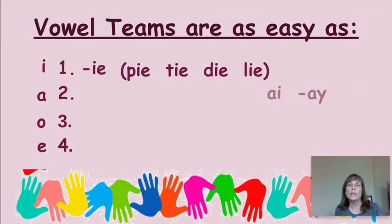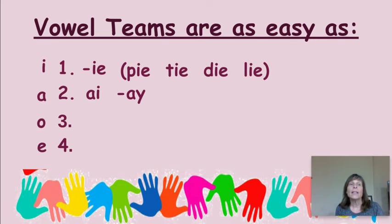Let's take a look at the A teams. AI says A, and dash AY says A. Do you know when I'll use which team? If you thought about dash IE coming at the end, then dash AY probably comes at the end of a word — and it does. It comes at the end of a word or a syllable.